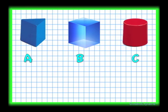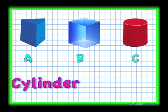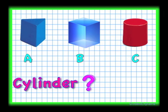A, B, C are three different shapes. Can you tell me which one of these is a cylinder? You'll have ten seconds to guess the answer.